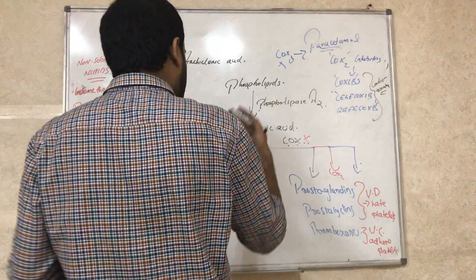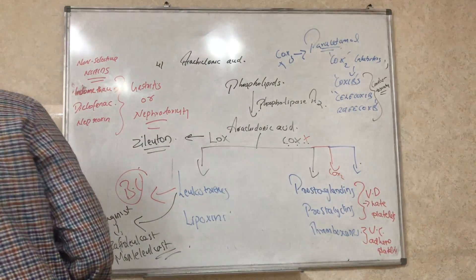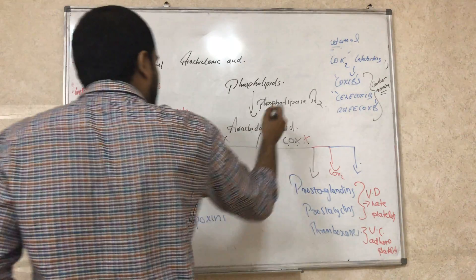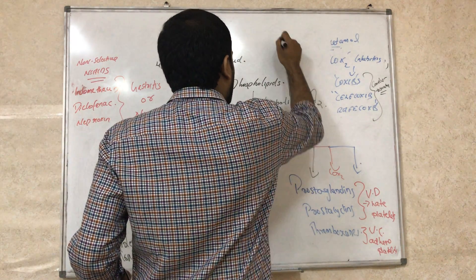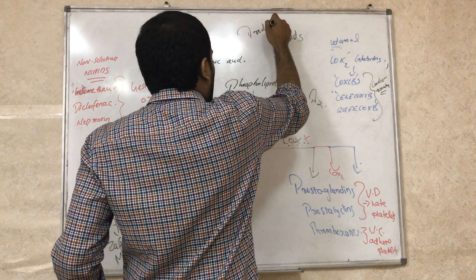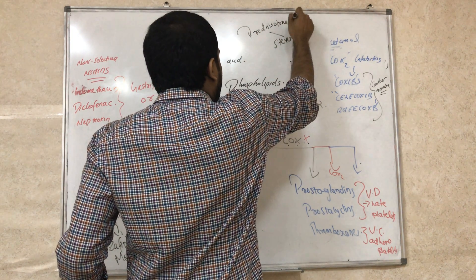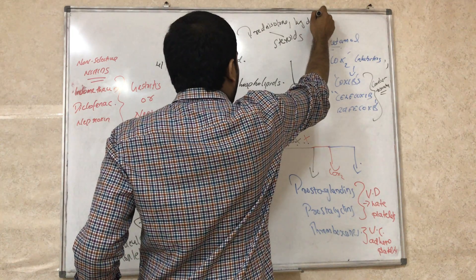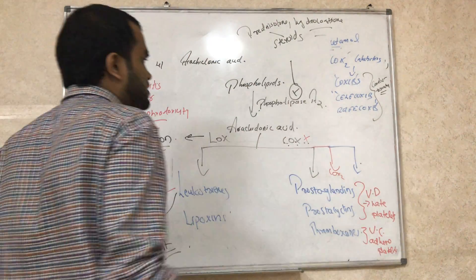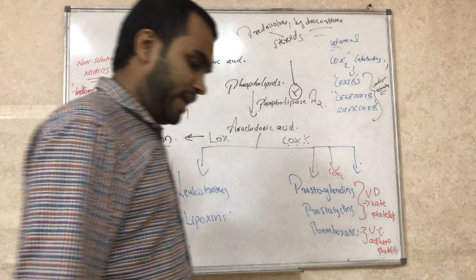So if you can't treat a patient with any of these drugs, we will go with the last option, which is steroids. What are steroids doing? Steroids block this enzyme. Steroids like prednisolone, hydrocortisone, they are blocking the enzyme, so the whole pathway is blocked.